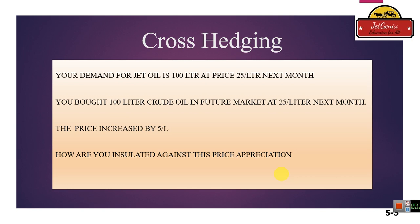If the price increases, they will lose money. So to hedge this risk, they buy 100 liters of crude oil in the futures market at today's rate of $25 per liter, signing this contract for next month. After one month, the price has increased by $5 per liter, as expected, and now jet fuel is available at $30 per liter. They have already done the futures contract to tackle this risk.